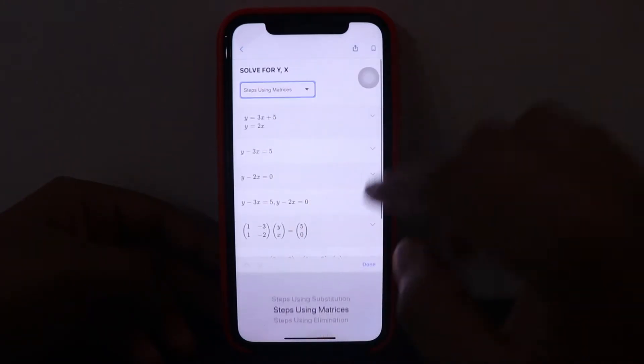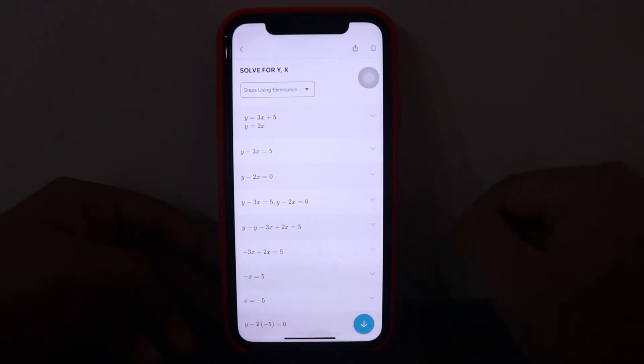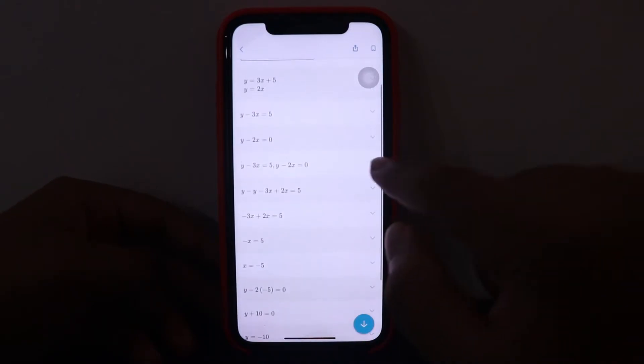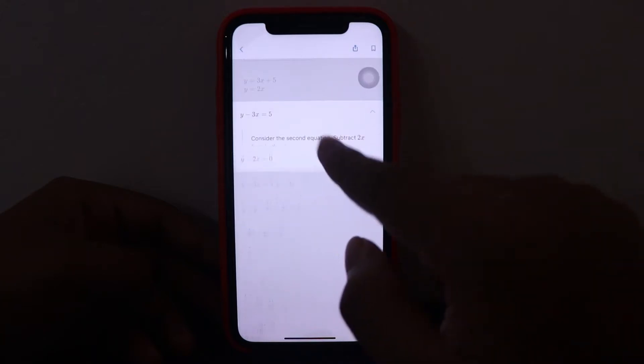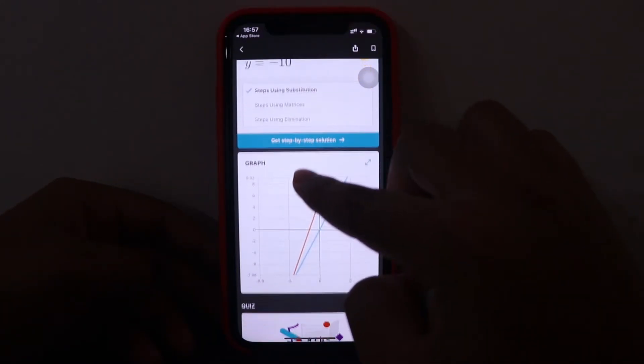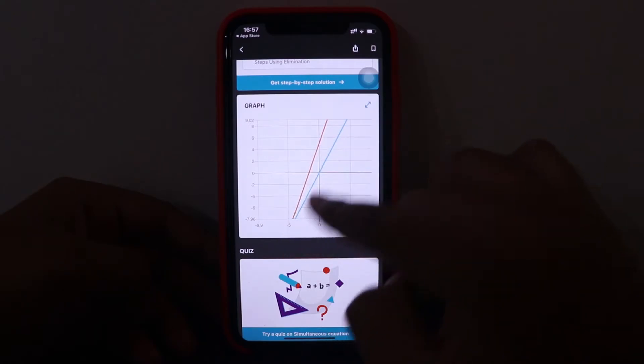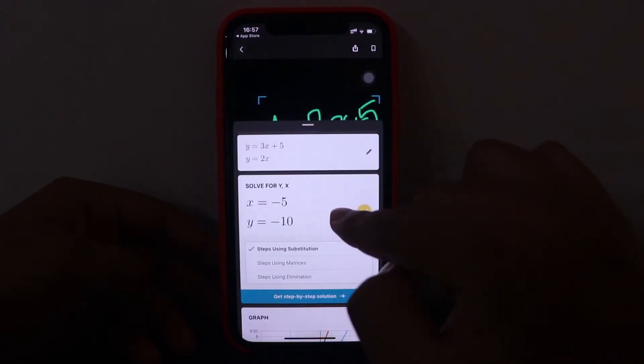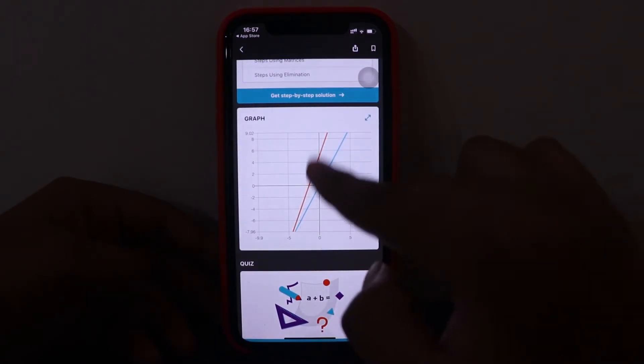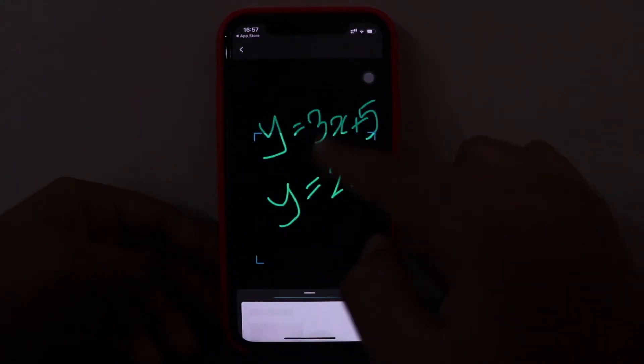And similarly there's the third method as well, steps using elimination. So this was it for the equation and here you see the graphs as well, like how the graph of both the equations will look like.